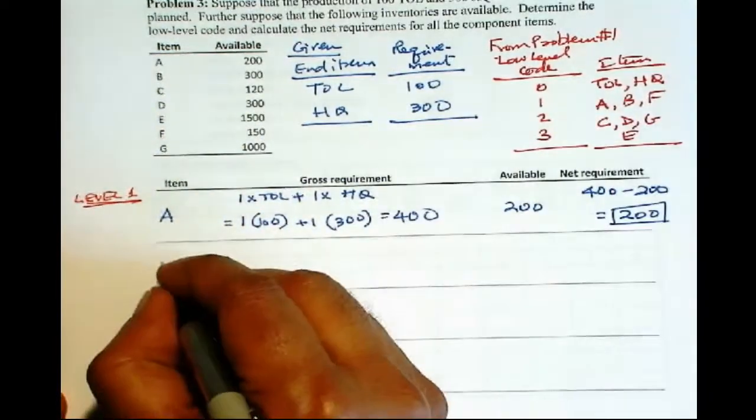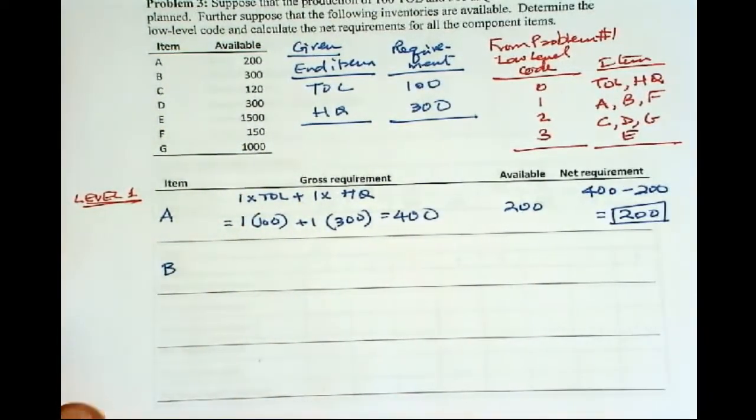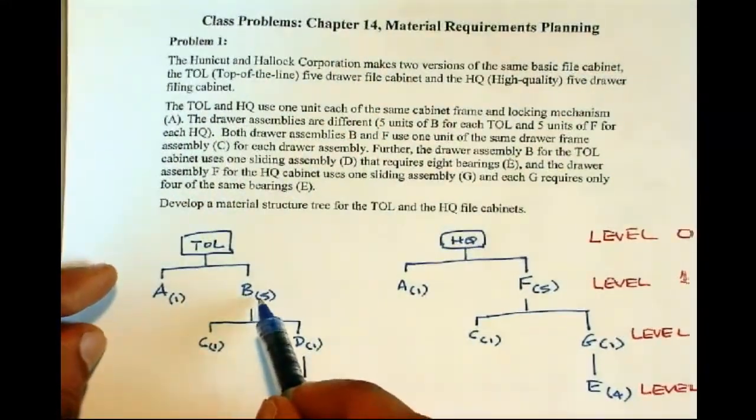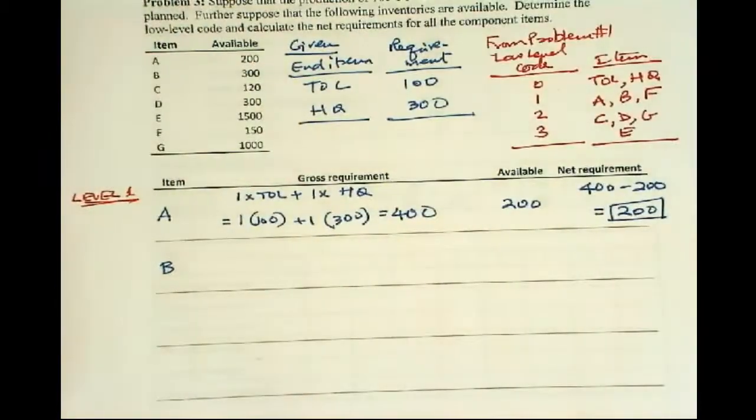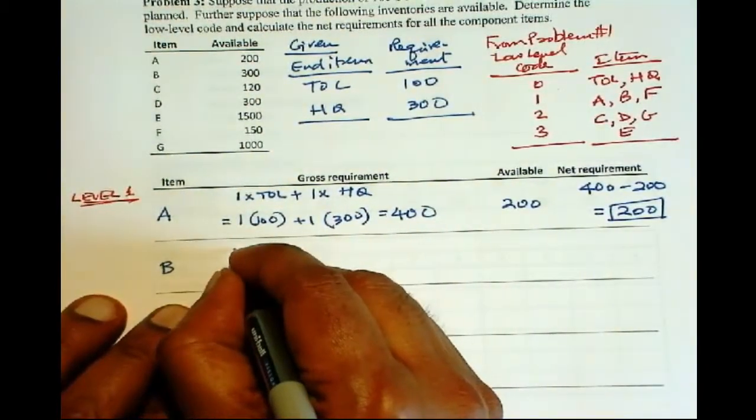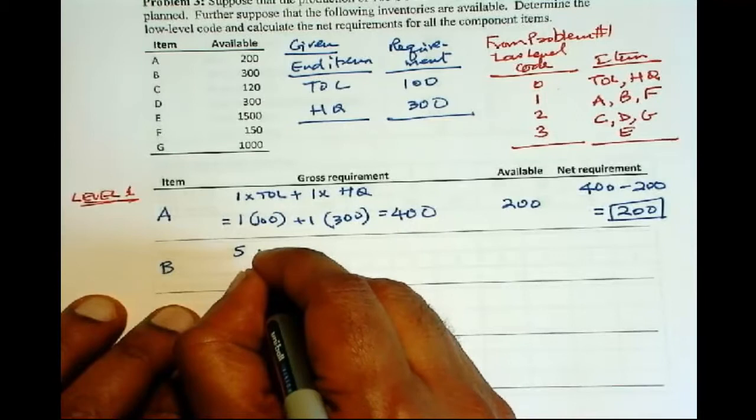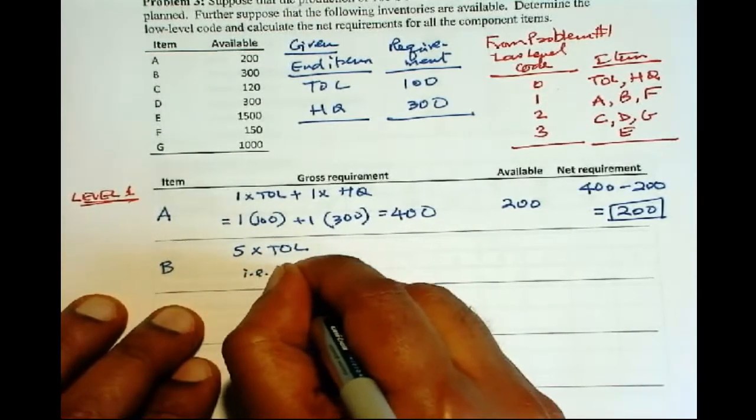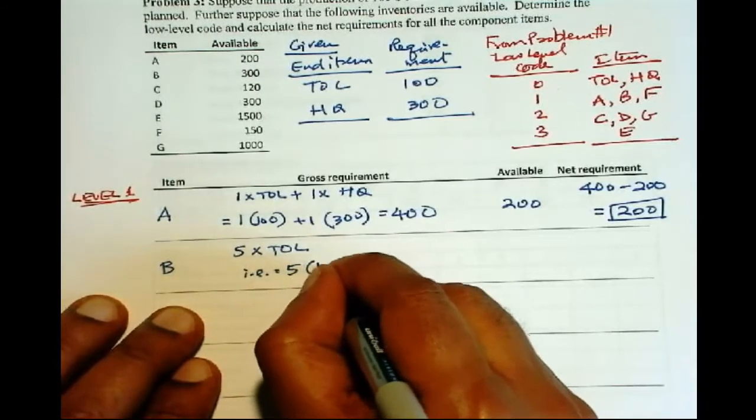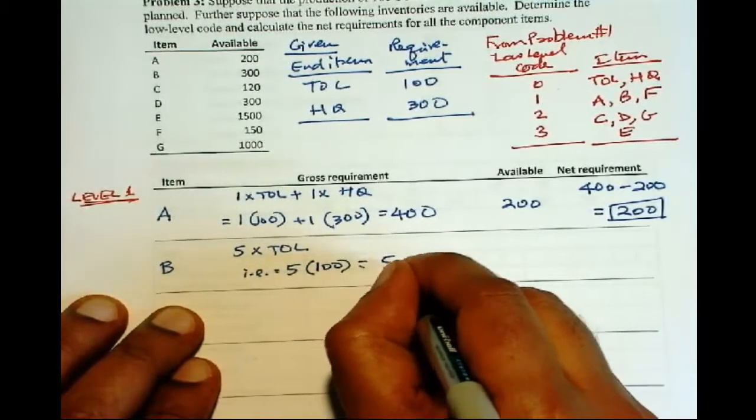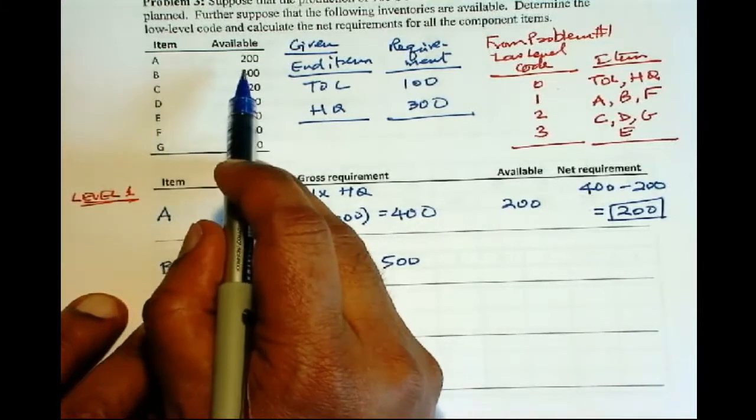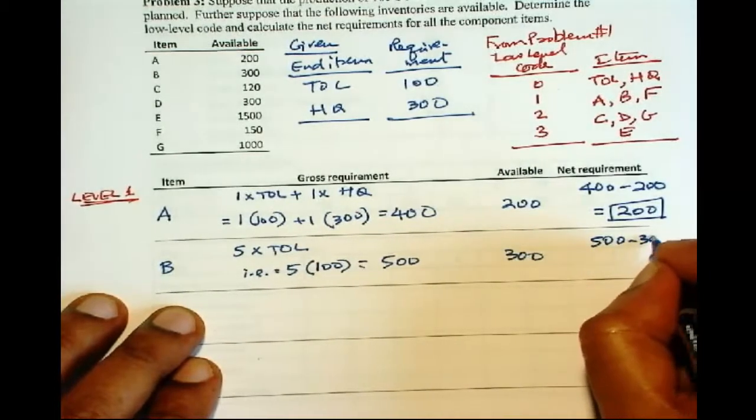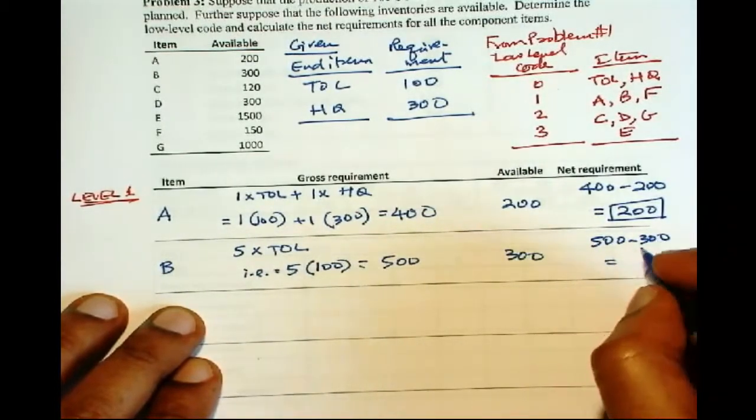Now let us take B. You need 5 units of B for each TOL. So the requirement is 5 times TOL. And that is equal to 5 times 100 equal to 500. And we have 300 available. So 500 minus 300 is 200.